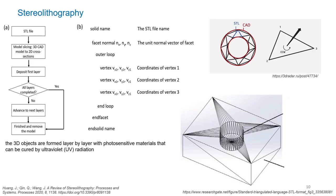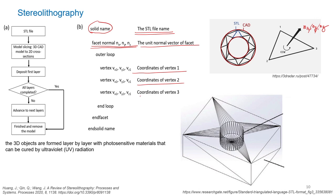A typical STL file contains the solid name, information about the unit normal vector of each facet (nx, ny, nz), and the coordinates of vertex 1, vertex 2, and vertex 3, followed by end-of-facet and end-of-solid markers. Every solid has a finite number of facets, and every facet has a definition of its vertices as well as unit normal vectors.